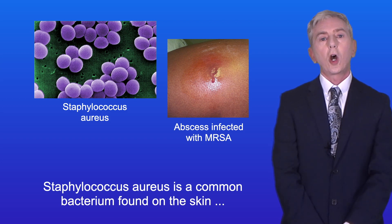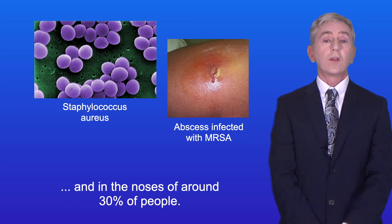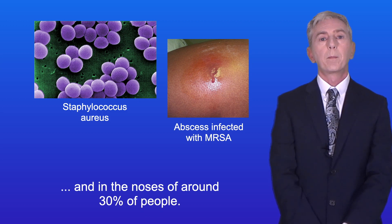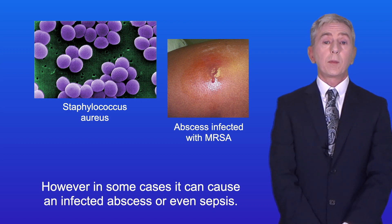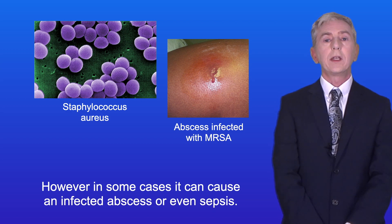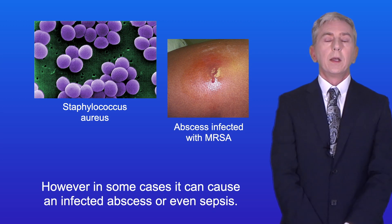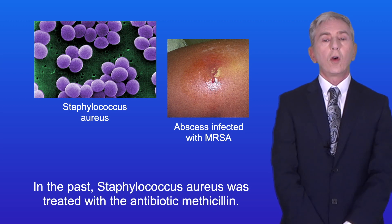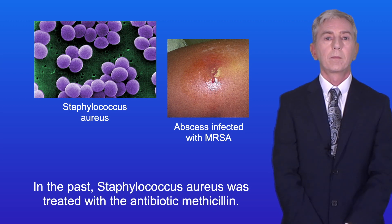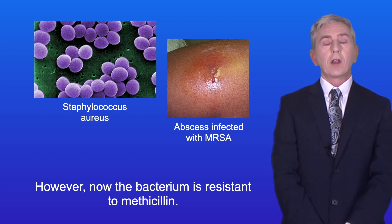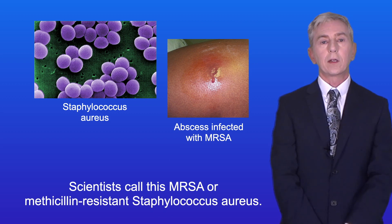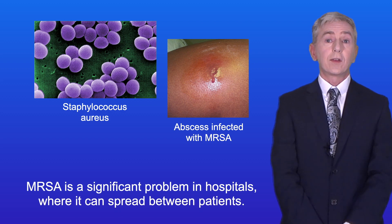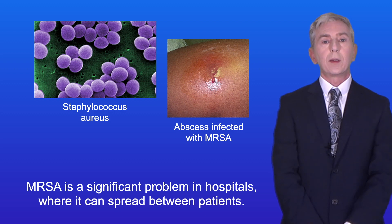Staphylococcus aureus is a common bacterium found on the skin and in the noses of around 30% of people. In healthy people it rarely causes harm, but in some cases it can cause an infected abscess or even sepsis. In the past, Staphylococcus aureus was treated with the antibiotic methicillin. However, the bacterium is now resistant to methicillin. Scientists call this MRSA, or Methicillin-Resistant Staphylococcus aureus, and MRSA is a significant problem in hospitals where it can spread between patients.